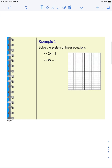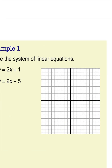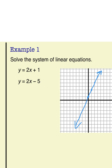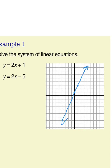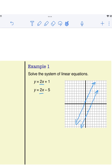For our first example we have y equals 2x plus 1. We're going to graph that — we start at the y-intercept and the slope is 2, so we go up 2 over 1. There's our first line. The second equation is y equals 2x minus 5, so we start at negative 5 and the slope is 2 again, so we go up 2 over 1. Because these lines are parallel and have the same slope, they are never going to intersect, which means they have no solution.